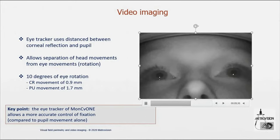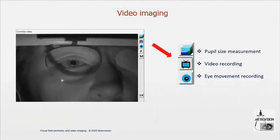On the video interface, you have three different functions. The first button on the top allows you to measure the pupil size. The second button allows you to start video recording. And the third button allows you to start eye movement analysis in real time.